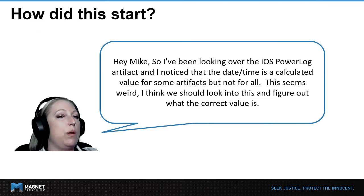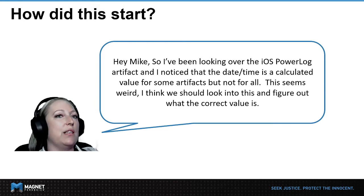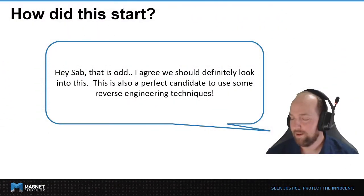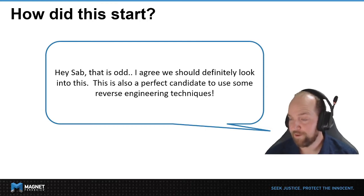Hey Mike, I've been looking over the iOS Powerlog artifact and I noticed that the date and time is a calculated value for some artifacts, but not for all. This seems really weird. I think we should look into this and figure out what the correct value is. That is odd — I agree we should definitely look into this. This is also a perfect candidate to use some of my famous reverse engineering techniques.